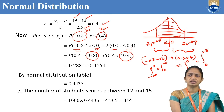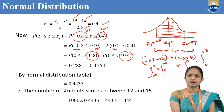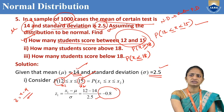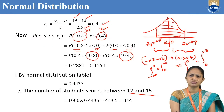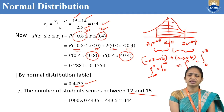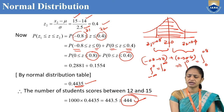Therefore, the number of students scoring between 12 and 15 is: total students are 1000, so we multiply 1000 into 0.4435, which equals 443.5, approximately 444 students.